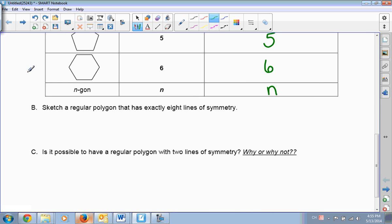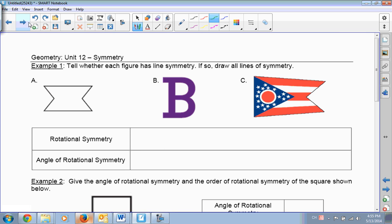Okay, we're going to save B and C for class to turn on the back. Example one asks us to tell whether each figure has a line of symmetry. If so, draw all lines of symmetry. Okay, just for right now, we're just going to look at example B, which is a giant B. How many lines of symmetry does this guy have?